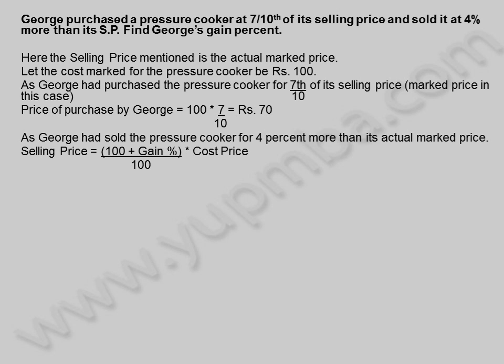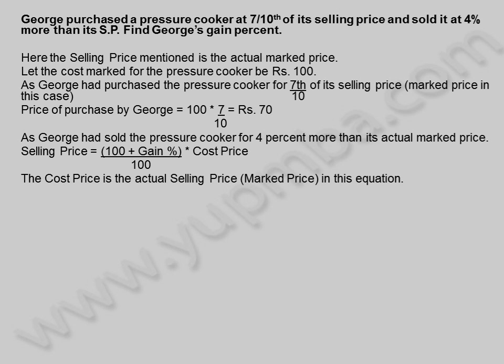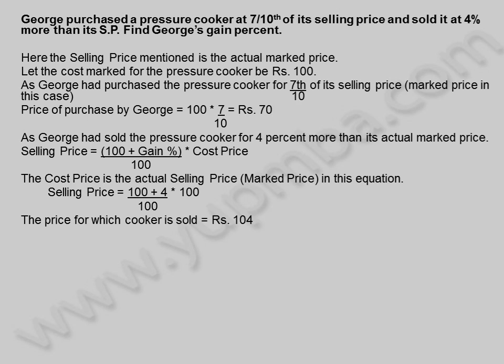As George had sold the pressure cooker for 4% more than its actual marked price, selling price is equal to (100 plus gain percentage) divided by 100, into cost price. The cost price is the actual selling price or marked price in this equation. Selling price is equal to (100 plus 4) divided by 100 into 100. The price for which the cooker is sold is equal to 104 rupees.